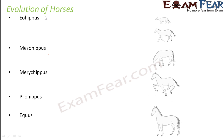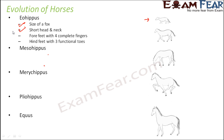Let us start with Eohippus. Eohippus was very small in size — almost the size of a fox. It had a short head and a short neck, forefeet with four complete fingers and hindfeet with three functional toes. Looking at the evolutionary history of horses, the forefeet and hindfeet underwent many changes over time. Eohippus was also called the dawn horse.